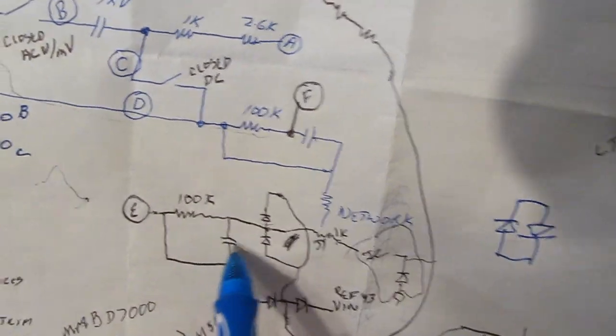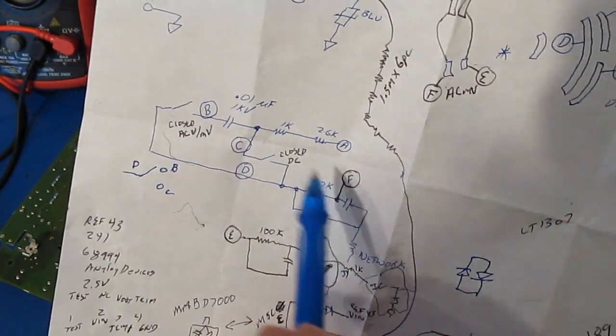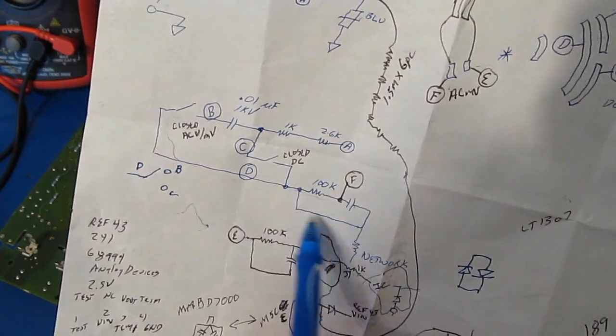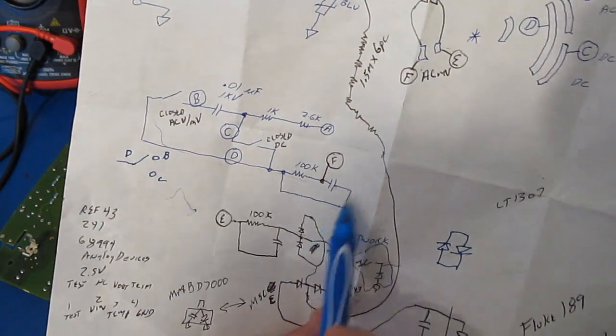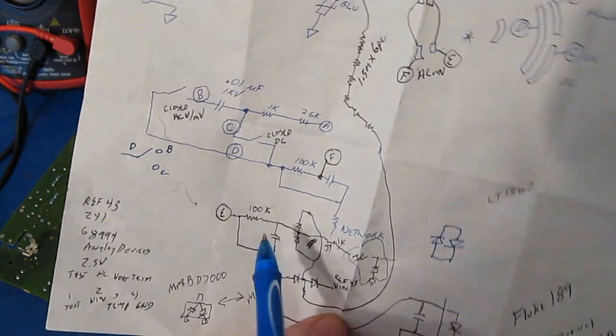I would expect that the initial current, because of having those in there, would be much higher. Now again, if you watch that first part of the video when we had the meter in the AC volt mode, what ended up happening is the LEDs were a little dimmer but they stayed on much longer.